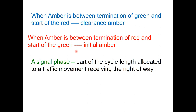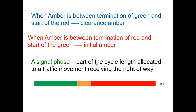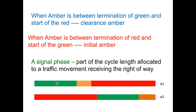When amber is provided between termination of green and start of red, it is called clearance amber. When it is provided between termination of red and start of green, it is called initial amber. A signal phase is the part of the cycle allocated to a traffic movement receiving right of way. All-red time is when all signals at the intersection show red, allowing vehicles in the intersection at the end of amber to clear before the next green phase.